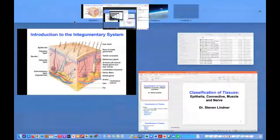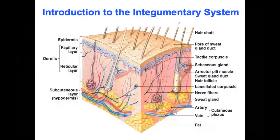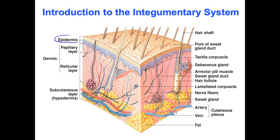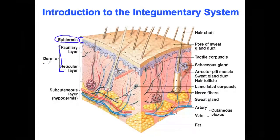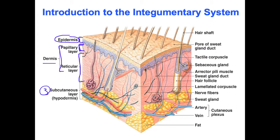Welcome back. We're going to be focusing on the integumentary system and the skin. The upper portion is the epidermis, and deeper we have the dermis, which has two layers: the superficial 20% portion called the papillary layer, and the deeper 80% portion called the reticular layer. The third and deepest layer is the hypodermis — so you have epidermis on top, dermis, then hypodermis.